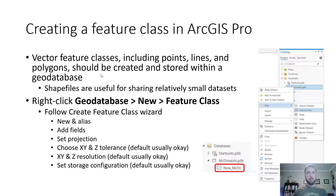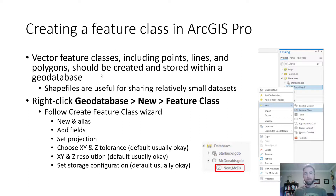Vector feature classes — including points, lines, and polygons — should be created and stored within a geodatabase. Shapefiles are handy but have limitations. They're good for sharing relatively small datasets, but if you have a large number of attributes or features, try to stay away from shapefiles unless you plan on sharing them. If it's just for yourself, create a feature class in a geodatabase — you'll have better luck avoiding crashes and freezing. Shapefiles have a purpose, but they are not the most reliable or secure file format.